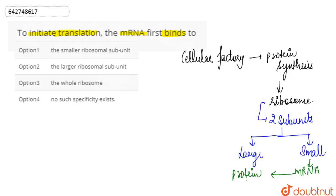So we can say that option one is the correct answer. To initiate translation, the mRNA first binds to the small subunit. Option one is our correct answer.